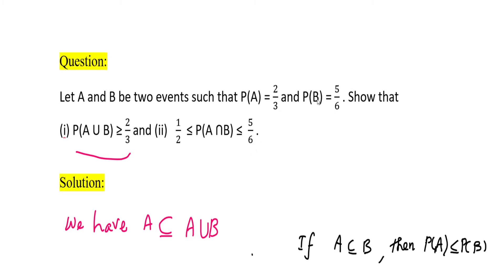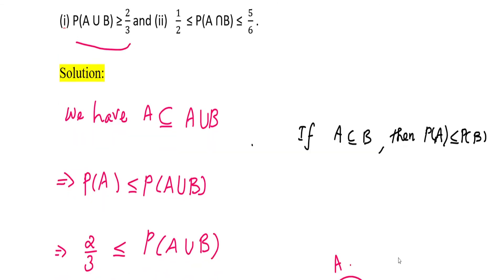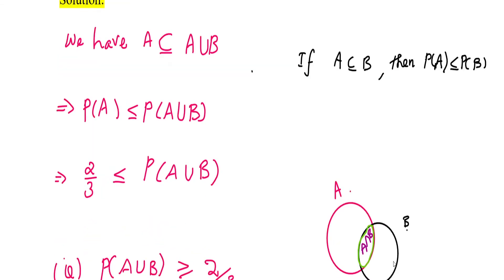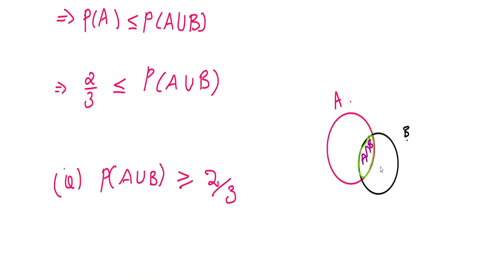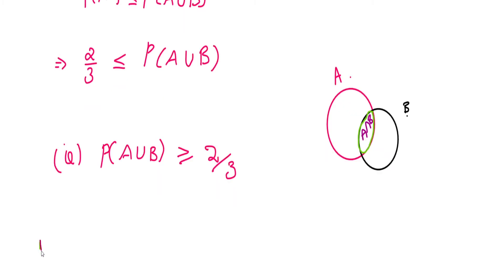For the second part, we use the relation between B and A∩B. We can use these two relations. Here, A∩B is contained in B.